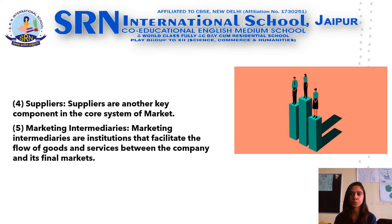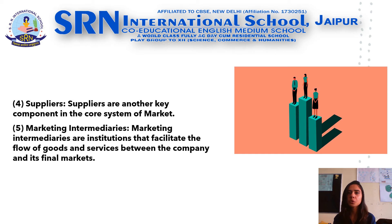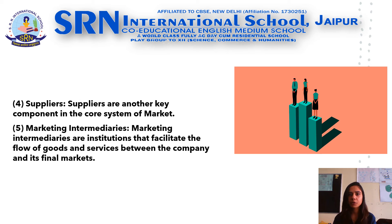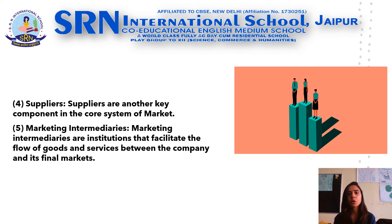The fourth force we have is supplier. A supplier is another key element of the core system of the market. The company is essentially a resource conversion machine that converts materials, machines, labor, and funds into final goods or useful products. The necessary resources are obtained from suppliers. Lack of or non-availability of suppliers can ruin the market for a product.